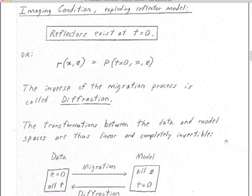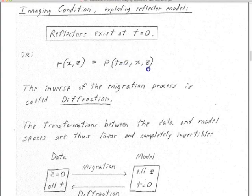Let's define our imaging condition for the exploding reflector model. Reflectors exist at t equals zero, at whatever depth. We're going to define our reflectivity section — this is our model, this is what we want to get — derived from our wave field p. Our original wave field p was for all time at z equals zero. Instead, the reflectivity section is the wave field p at t equals zero for all z. We're just making that identification.